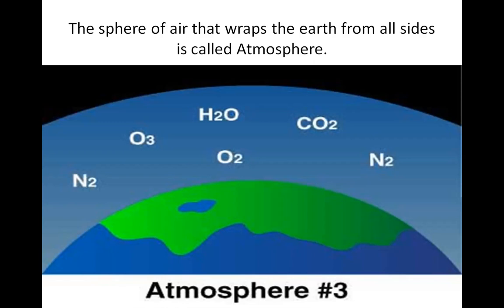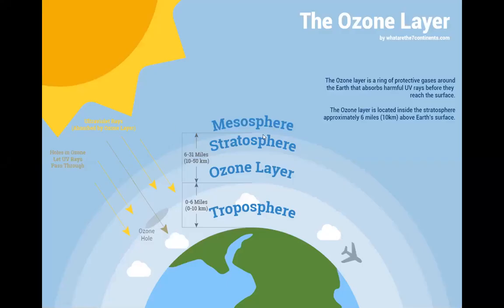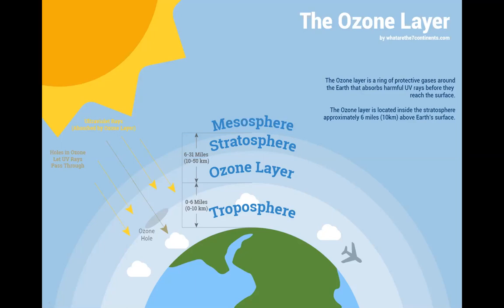Ozone gas comprises a very small proportion in the air. This gas absorbs the ultraviolet rays of the sun and protects the earth from excessive heat of the sun. This gas is more in proportion in the morning, in the open ground and in the air near the sea.